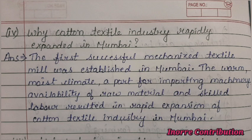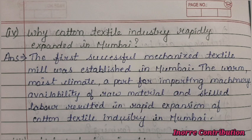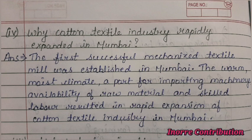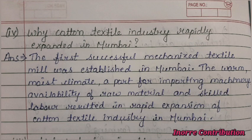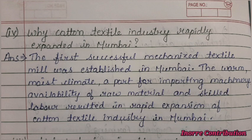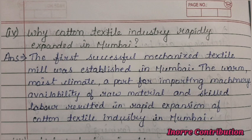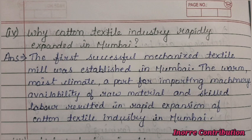Next question: Why did the cotton textile industry rapidly expand in Mumbai? The first successful mechanized textile mill was established in Mumbai. The warm, moist climate, a port for importing machinery, availability of raw material, and skilled labor resulted in the rapid expansion of the cotton textile industry in Mumbai.